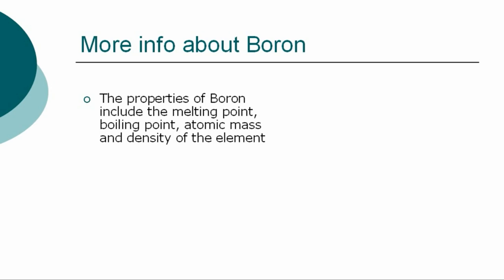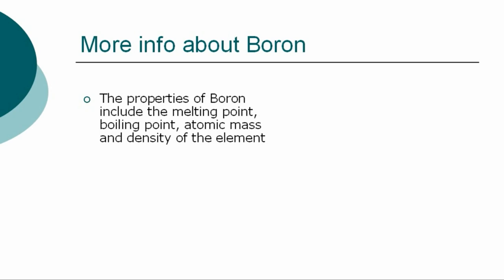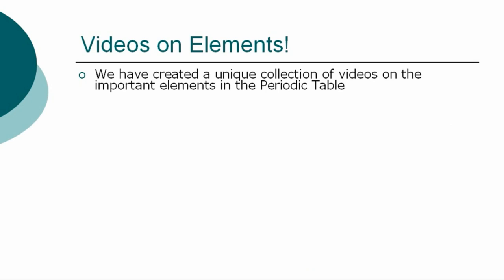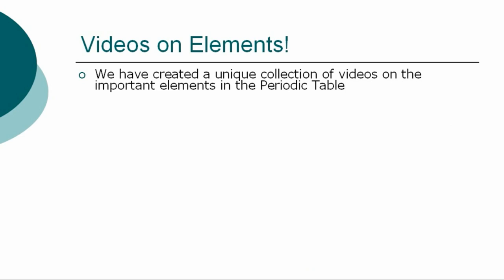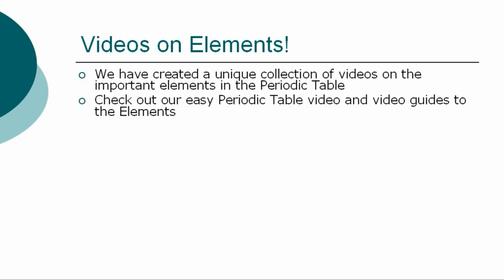The properties of boron are classified by many other factors, including the melting point, boiling point, atomic mass, and density of the element. All of these precise measurements, together with additional facts and information, can be found on our website. So ends our simple guide to the element boron. We have created a unique collection of videos on many other important elements to enable chemistry students to gain a fast overview of the properties of the elements together with their discovery and history. Check out our easy video guides to the elements via our website.